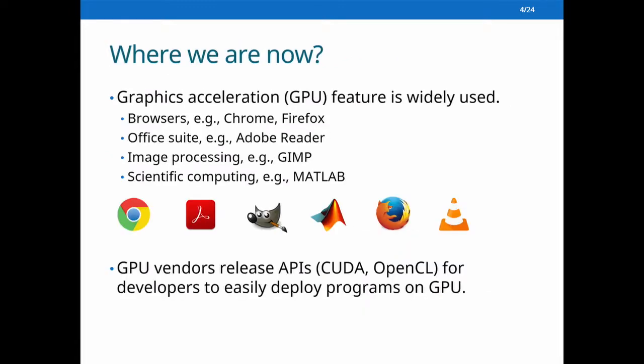Nowadays, the graphic acceleration feature is widely used by popular applications such as Chrome, Adobe Reader, GIMP, MATLAB, Firefox, and VLC — for video encoding and decoding, page rendering, and other special-purpose computations. GPU vendors also release convenient and powerful APIs for developers to easily deploy programs on GPU.